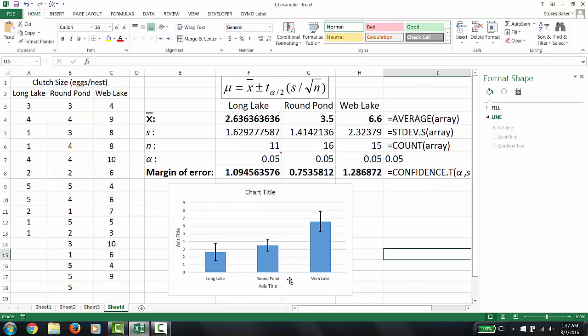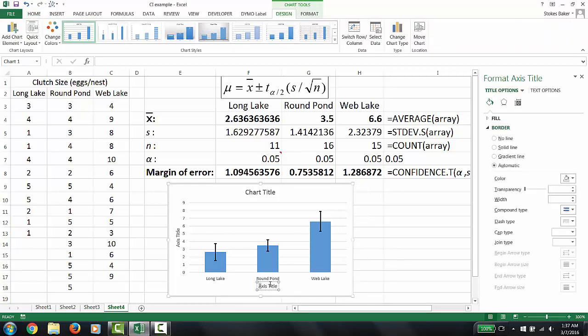Now to finish up our graph, we're going to label this axis title to goose population. For the y-axis we're going to use the term mean clutch size and insert our units, which is eggs per nest.